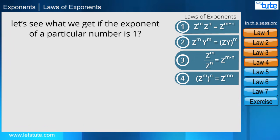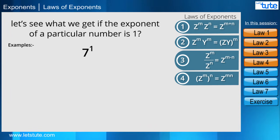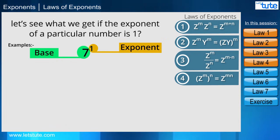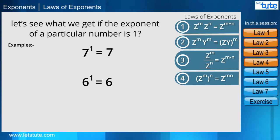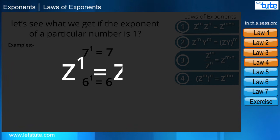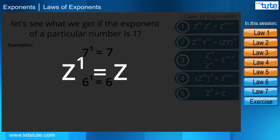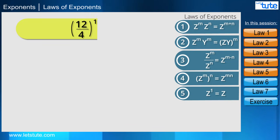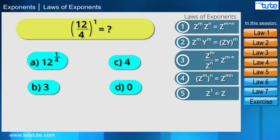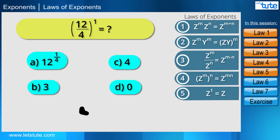Now let's see what we get if the exponent of a particular number is 1. For example, 7 raised to the power 1: the base is 7 and we multiply it only once, so the answer is 7. In general, z raised to the power 1 equals z. This is our fifth law of exponents — any number raised to the power 1 is the number itself. For example, 12 divided by 4, raised to the power 1, equals 3.